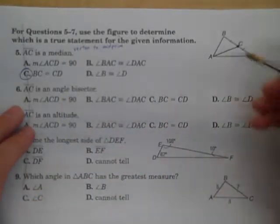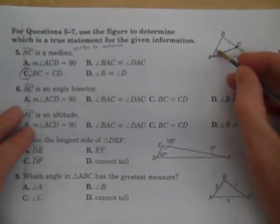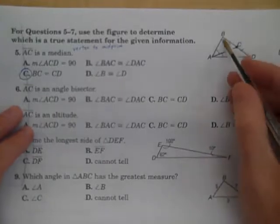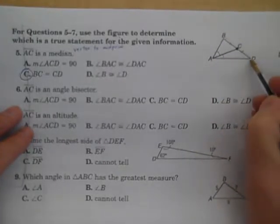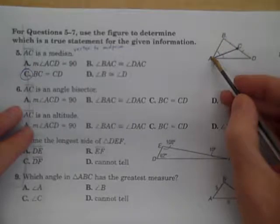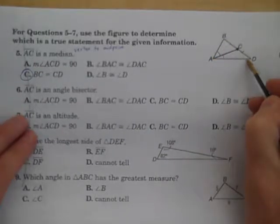Now, if AC is an angle bisector, the angle that is being bisected is this angle right here. Angle BAC and angle DAC would be congruent. Angle BAD is being bisected.